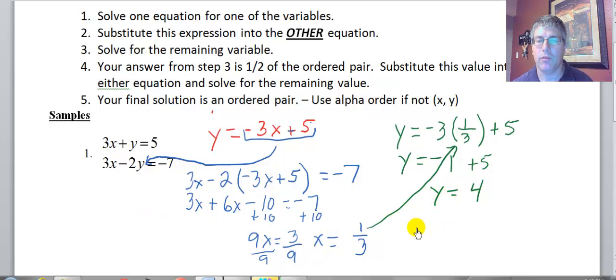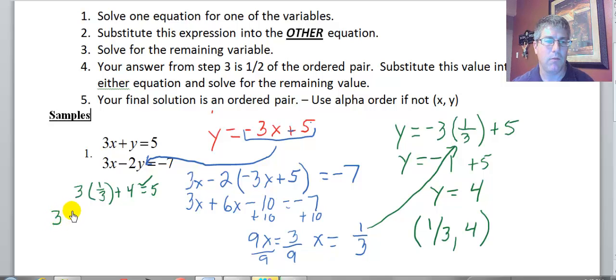My ordered pair is 1 third, 4, and that will satisfy both equations. So if I put 1 third in for X and 4 for Y, that should work. Sure enough, 3 times 1 third plus 4 equals 5. That checks out. And if I put it in the other equation...